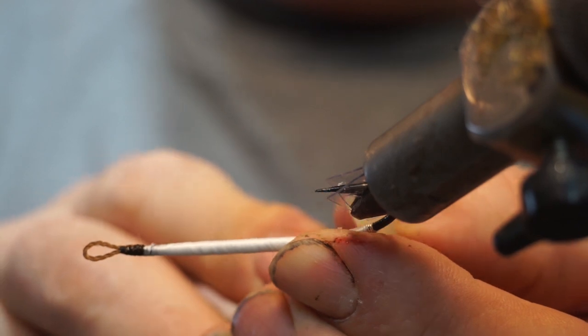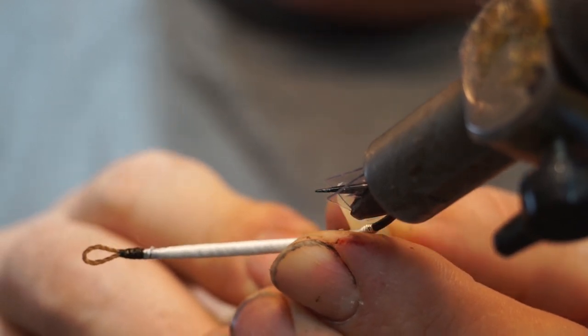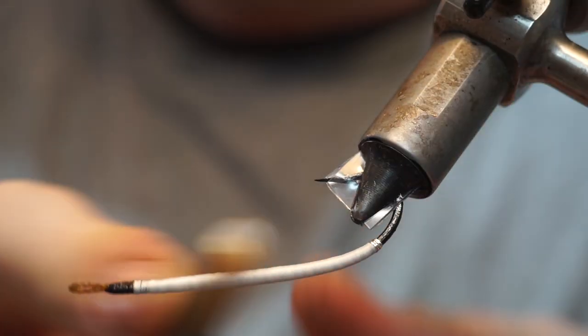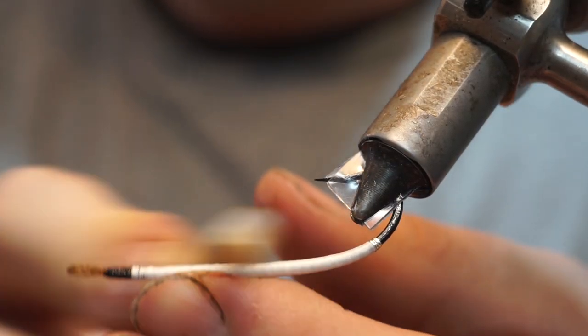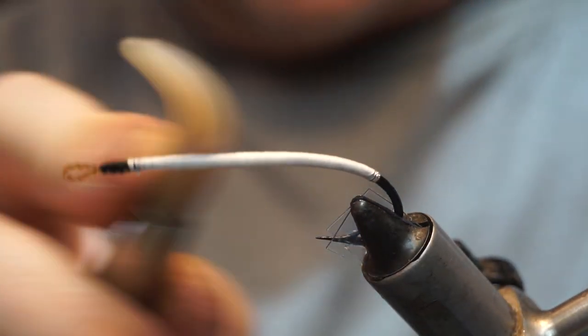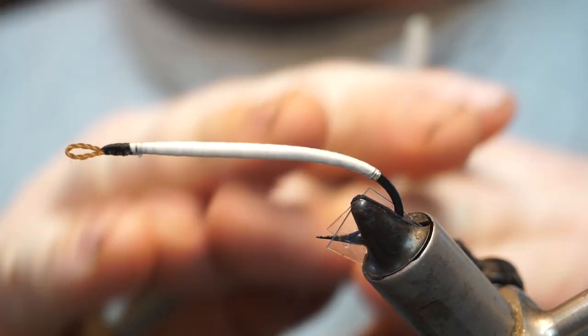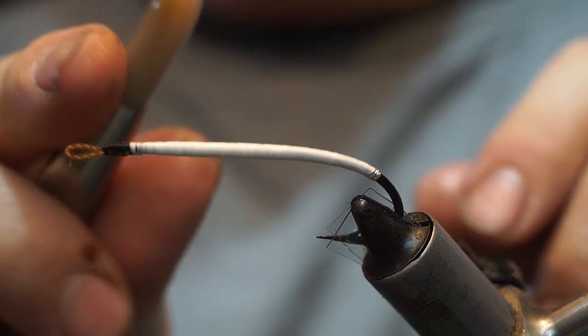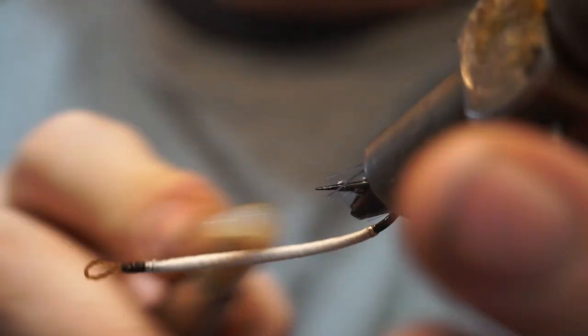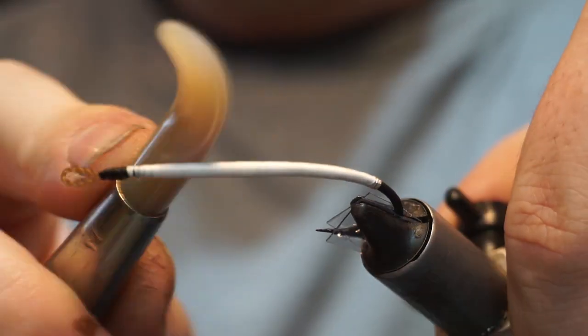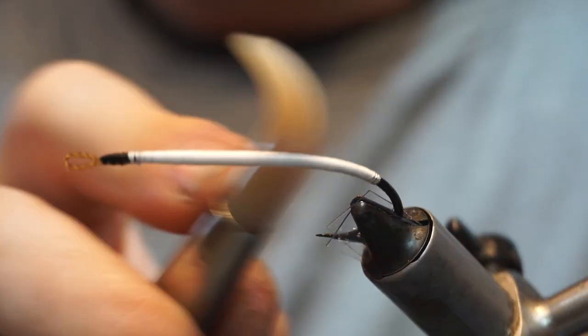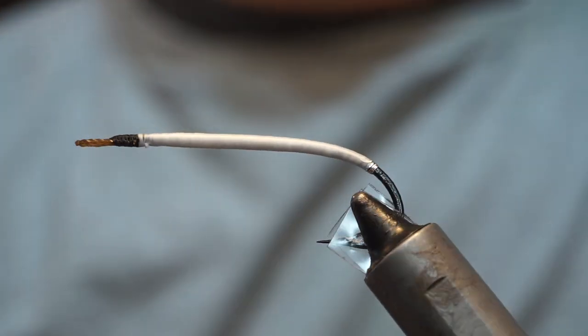Then what I'll do is take my burnisher and apply a bit more pressure down here where the tinsel is, underneath the underbody. What this burnishing does is help all those little wraps that are across each other. It sort of jostles them in and makes the whole effect smoother.